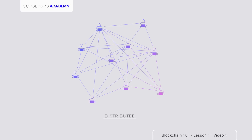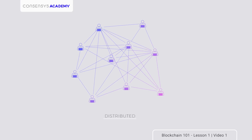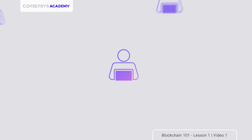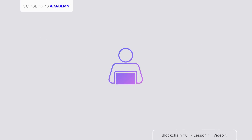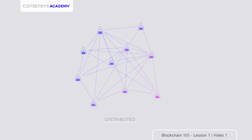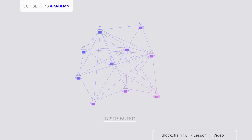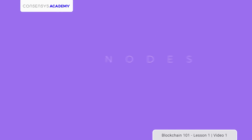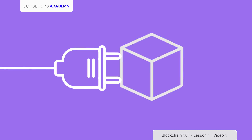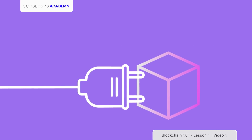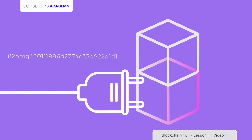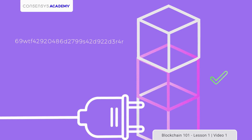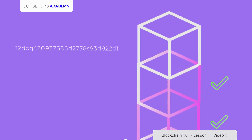We all have access to the system, which means we can all monitor and help run it. This means the system can't be owned by any one individual or entity. The software is replicated on people's computers around the world, called nodes — these are the computers that power the system by holding and verifying bundles of transactional data, known as blocks, in a chronological chain.